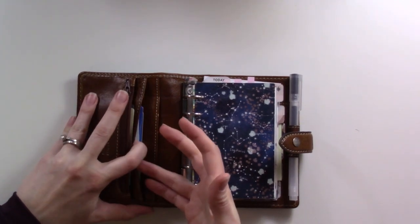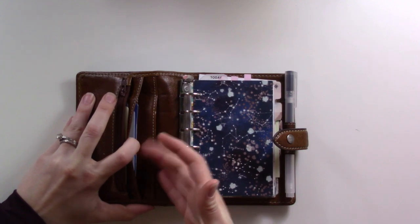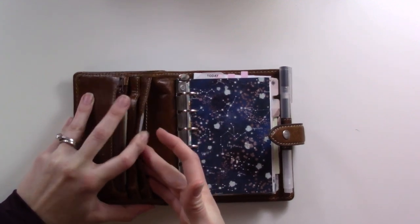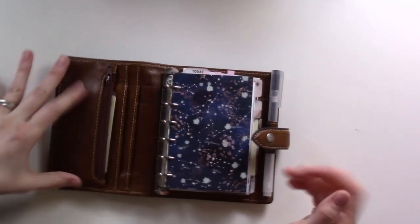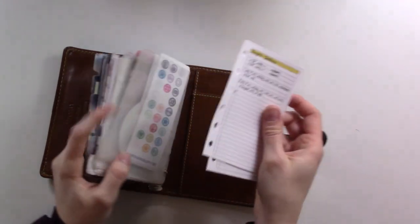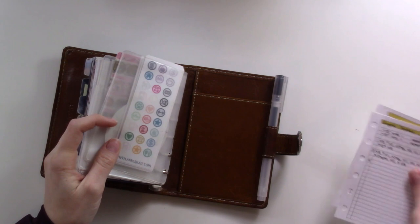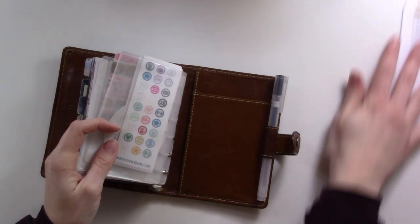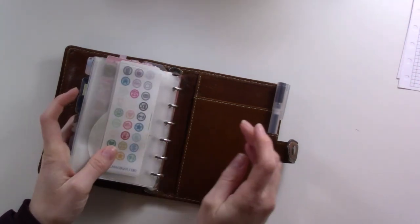We've got wallet stuff in the front - my driver's license, a couple credit cards, library card, another credit card, health insurance card, some gift cards back here, a little bit of change in the front pocket.